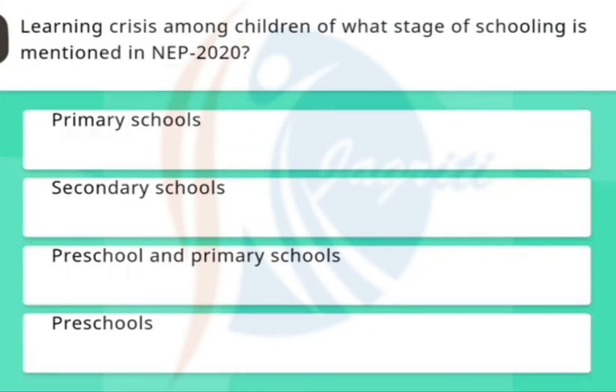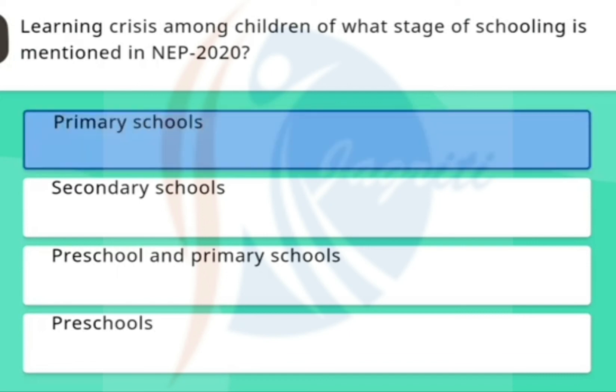Learning crisis among children of what stage of schooling is mentioned in NEP 2020? The correct option is primary school.